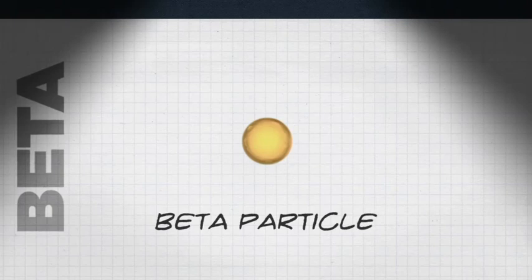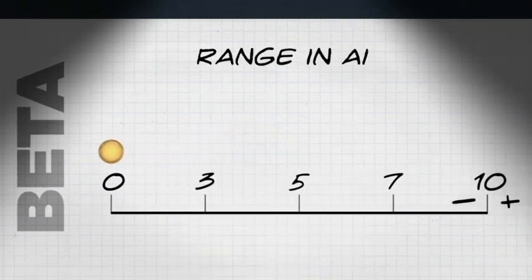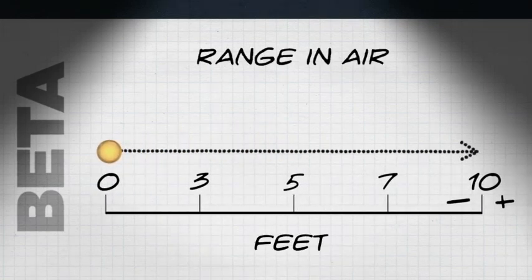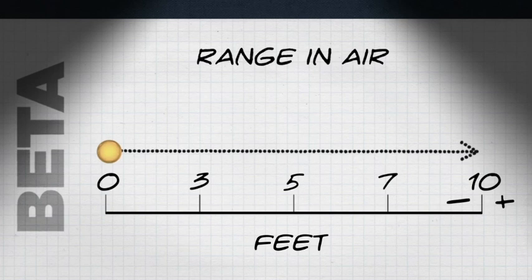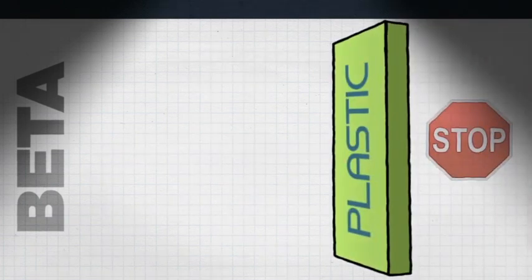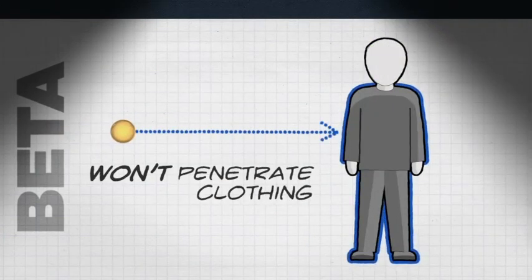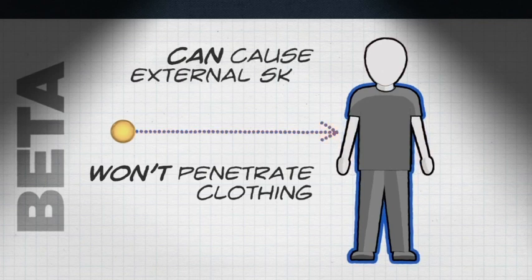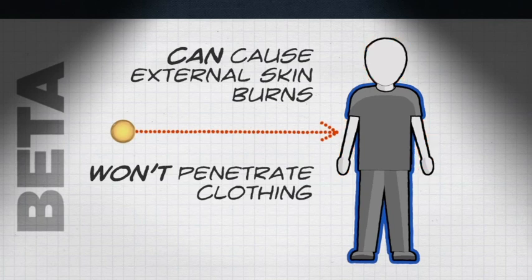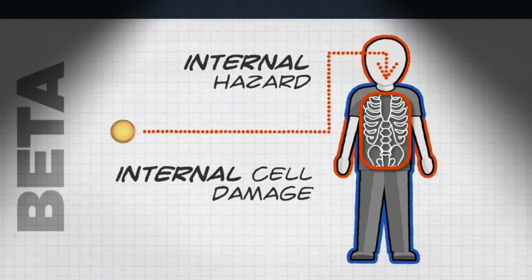Beta particles are also particles, not rays. They're very similar to electrons and have a longer range—they can go up to several feet in air. It takes maybe an inch of plastic or so to block beta particles. Many of them can penetrate a layer of clothing. If they're on the skin, they can cause skin burns. So beta particles represent an external hazard on the skin because they can penetrate the outer layer of skin, but also an internal hazard.